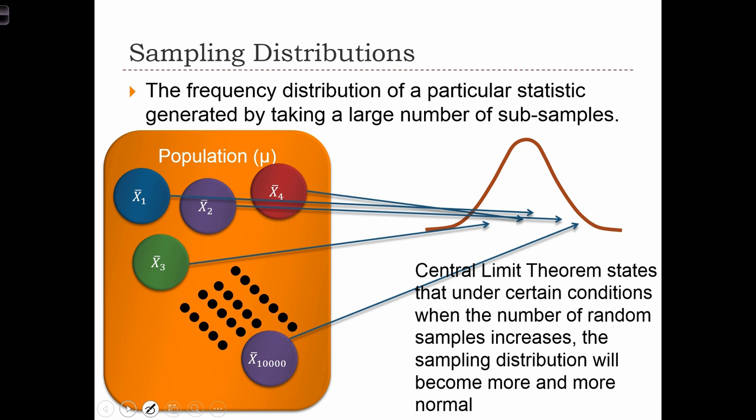If we were to take a subsample of that population, say this first subsample, we could calculate the sample mean, x bar, and we're going to put a subscript 1 here to indicate that that's the sample mean of the first sample. We can go on and collect another sample and calculate x bar 2 from that sample. And we can do this many times.